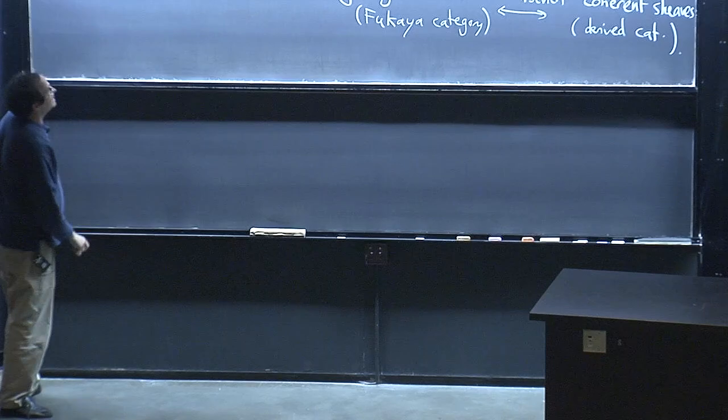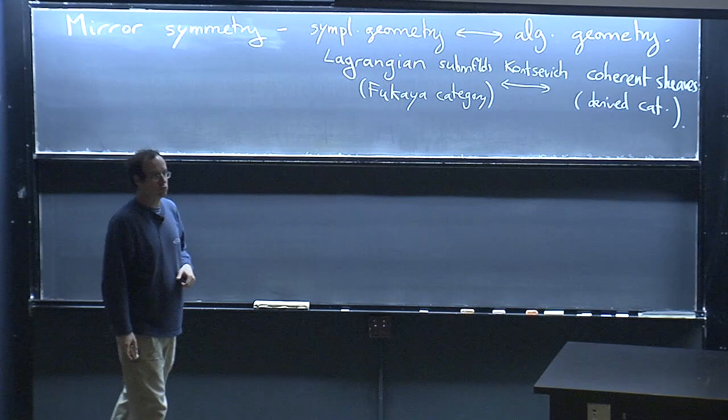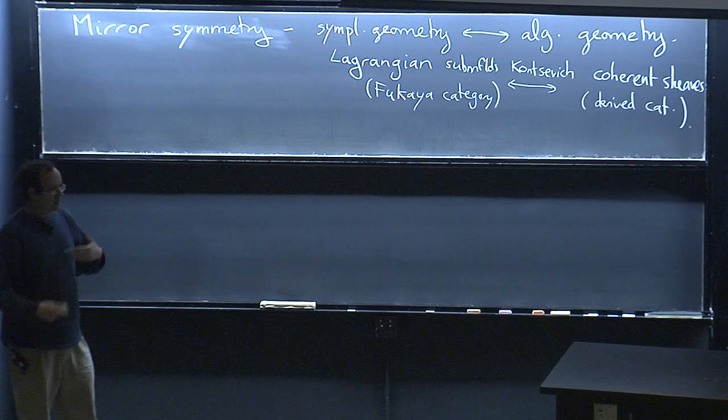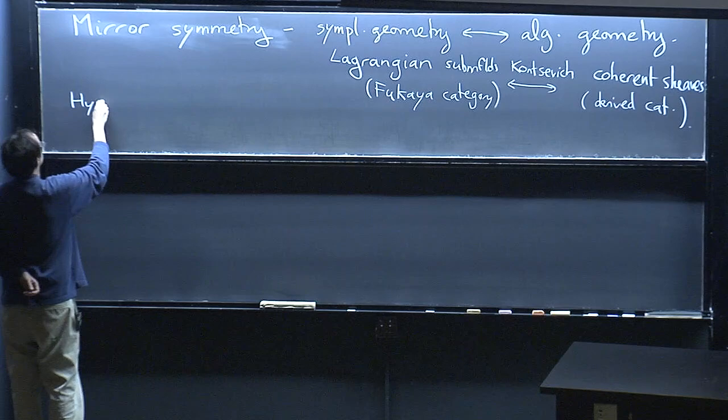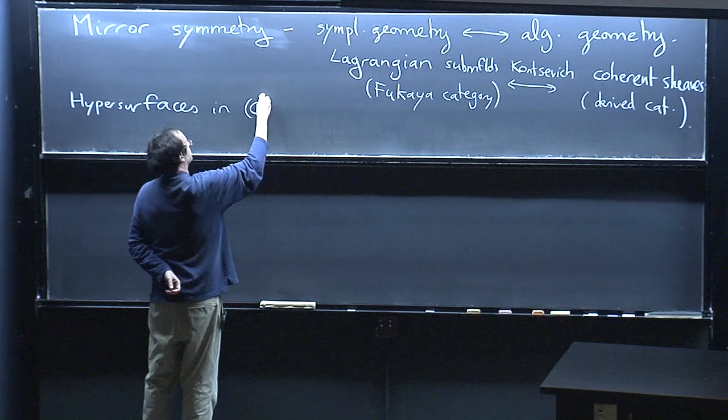The class of spaces that mirror symmetry can apply to has been extended steadily over the years. Initially this was a statement about compact Calabi-Yau projective varieties, but now there's no clear limit anymore to what we can do. The class of spaces I want to look at today are hypersurfaces in affine space.